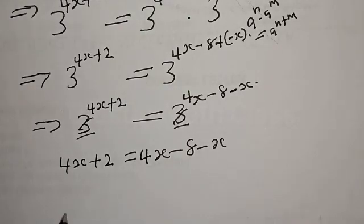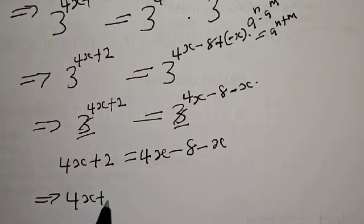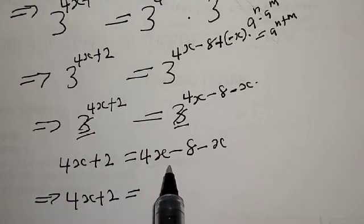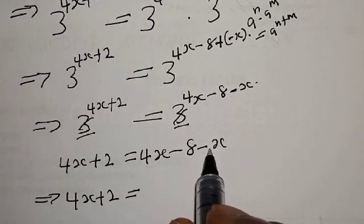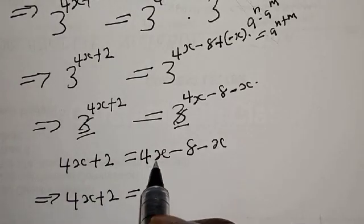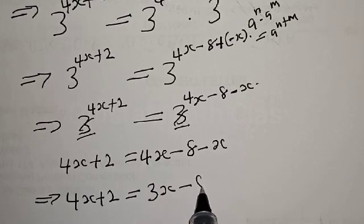This implies that we have 4X plus 2 to be equal to — here we have 4X, then minus X, so 4X minus X will be 3X, minus 8.